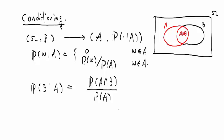This is the definition of the conditional probability of B given A, or condition A occurs.